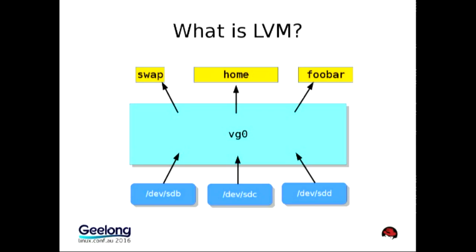Down here at the bottom, the blue boxes represent hard disks. Instead of partitioning those with normal partitions, you can give them to LVM. They become physical volumes and get grouped into something called the volume group. From that volume group you can create logical volumes, and these logical volumes are better than the volumes you could have created on the disks themselves. You can expand them more flexibly, make them redundant, so you can lose a disk and still be okay.